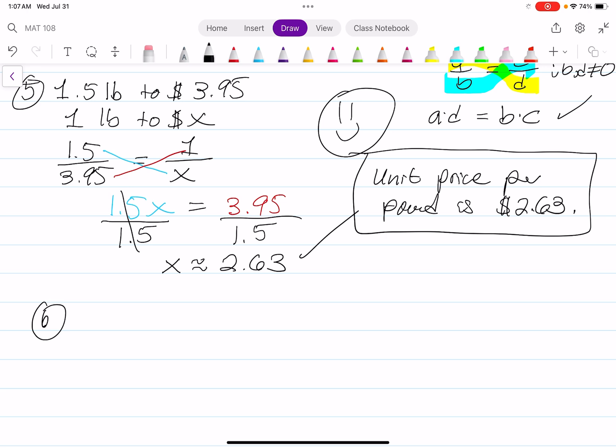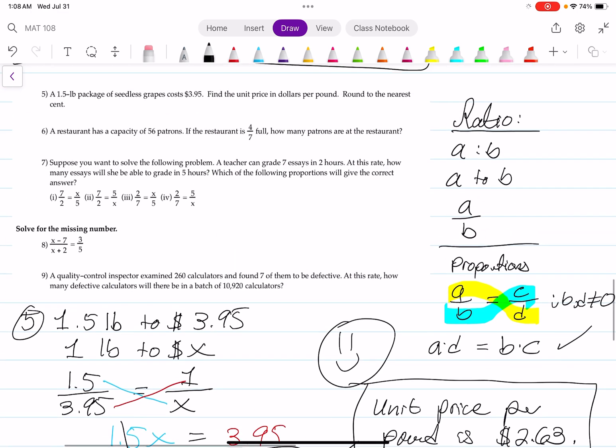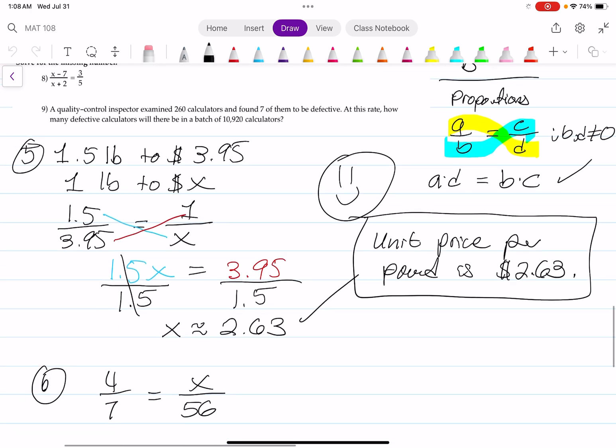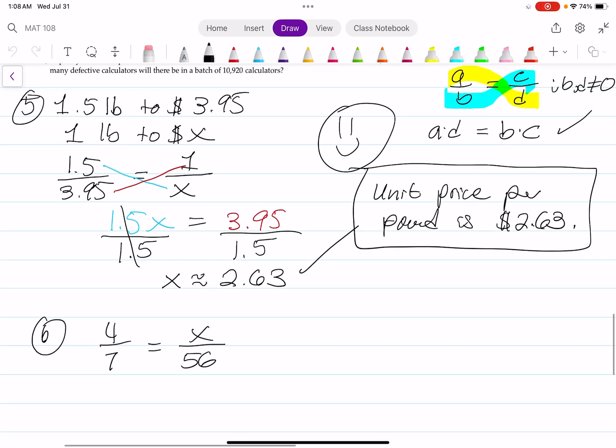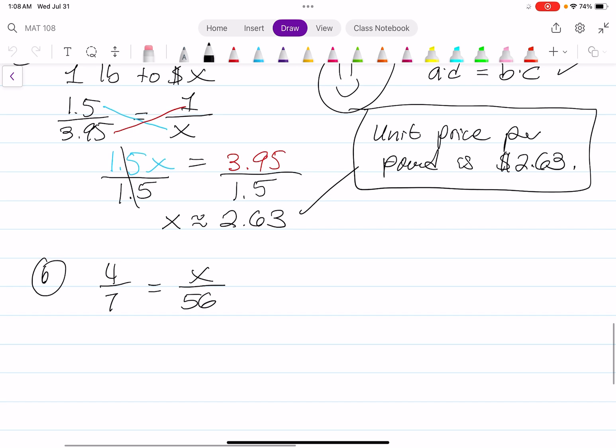We can say that four-sevenths equals X over 56. The reason we can say that is because, going back to the question, the capacity is 56 patrons. We have four-sevenths of some number that is filled. We have to find what is four-sevenths of 56.